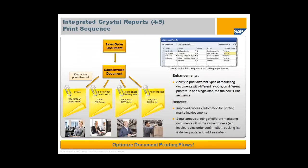Another Crystal Reports integration feature is Print Sequencing — giving you the ability to print different types of marketing documents with different layouts on different printers in one single step. For example, you can create a Quick Sales Process sequence: your invoice goes to the bookkeeper on the colour printer; your sales order confirmation goes to a sales printer on black and white; your packing list and delivery note automatically prints to the warehouse; and your address labels go to the logistics team in the warehouse — all from one Print Sequence. This really gives you the ability to optimize your document printing flows.